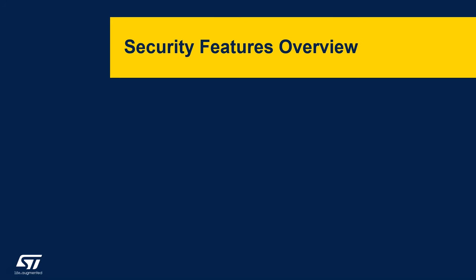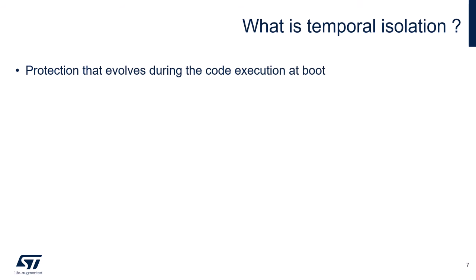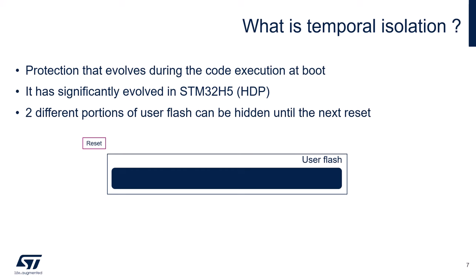Let's start looking at the temporal isolation mechanism available in the STM32H5. While TrustZone at runtime allows isolation between the secure and non-secure areas and code, the temporal isolation protects the boot code from being re-entered in any way other than by Reset. The principle is to isolate the secure boot from the application. The temporal isolation feature, called HDP — Secure Hide Protection — applies to the user flash. It's already used in other legacy STM32 families but has significantly evolved with the STM32H5, which provides the possibility to hide up to two different portions of the user flash, whereas only one single portion has been allowed in other STM32 microcontrollers.